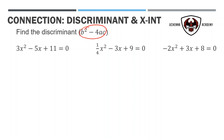Let's go ahead and do it. Here we've got 3x squared minus 5x plus 11. The 3, the leading number, that's our A. The negative 5 is our B, and the plus 11 is our C. If I want to solve for my discriminant, I'm just going to write down b squared minus 4ac and try to figure out what kind of number it is.